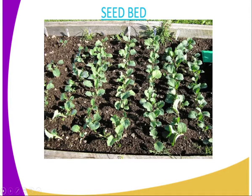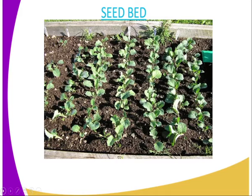Now we go to the diagram here. There is a diagram that demonstrates what a seed bed looks like. You can see it is a portion of land where seeds or seedlings are normally grown, watered on the same piece of land until maturity, and then harvested upon reaching maturity age.